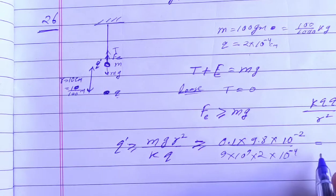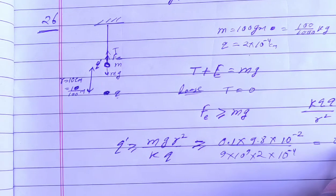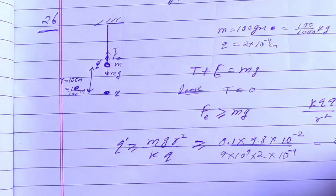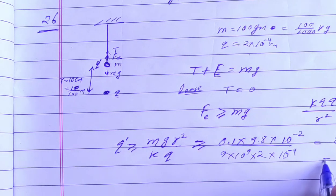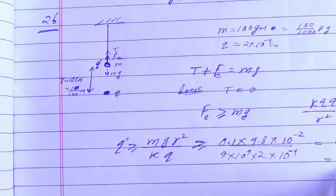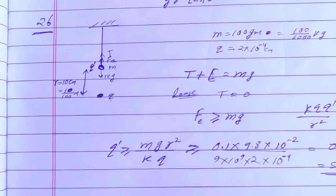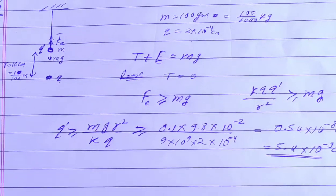Solving this further, we get the answer as 5.54×10⁻⁸ coulomb, or we can write it as 5.4×10⁻⁸ coulomb. This will be your charge.